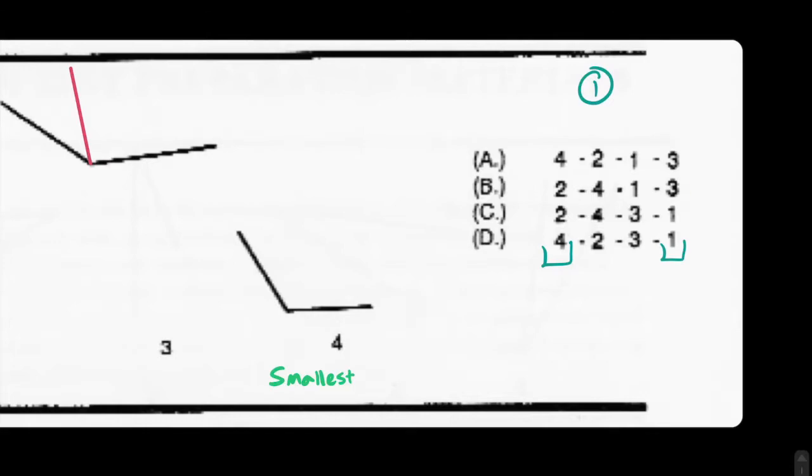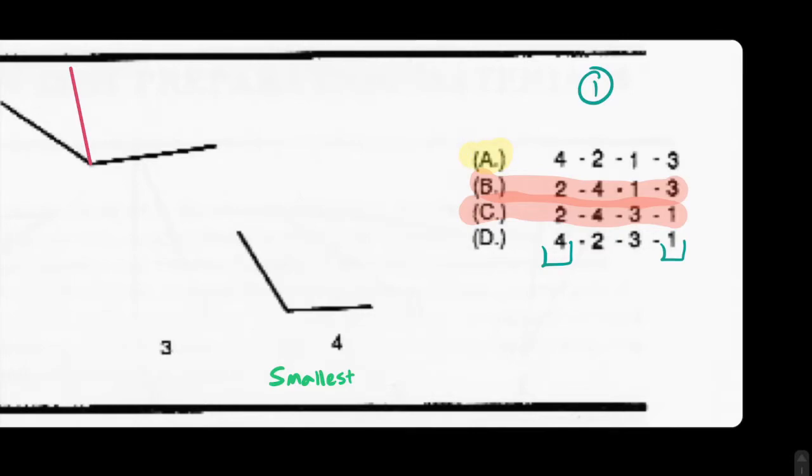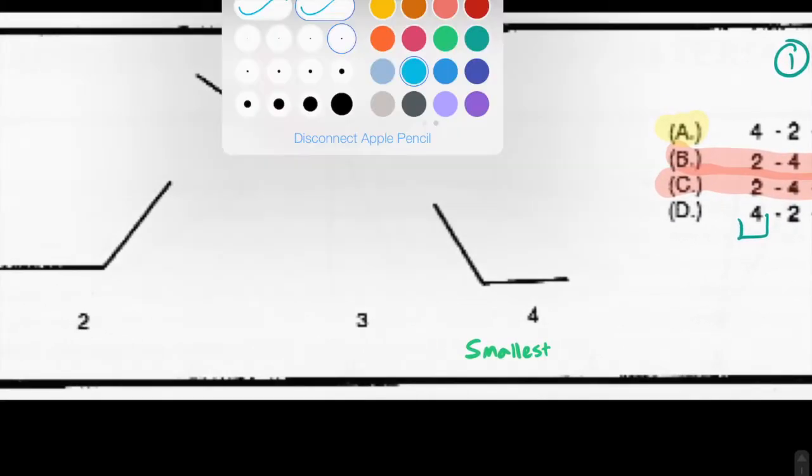So based on what we determined, B and C are crossed out, and our correct answer in this case is A. That's our correct answer, 4 being the smallest and 3 being the largest angle.